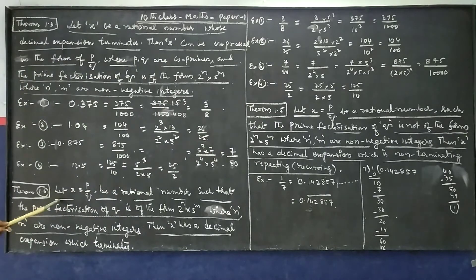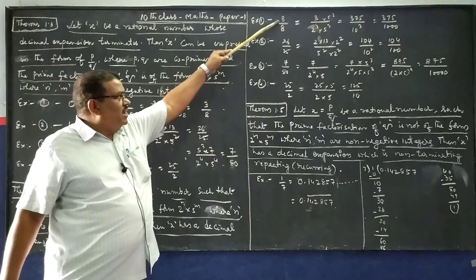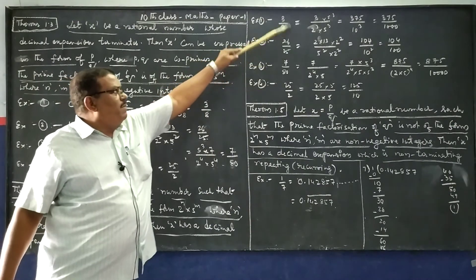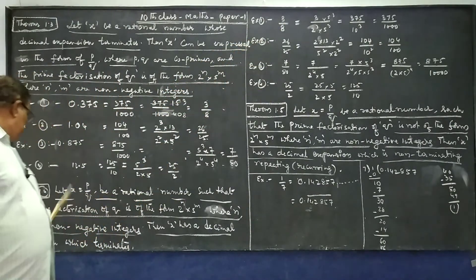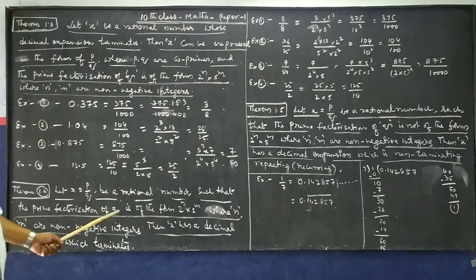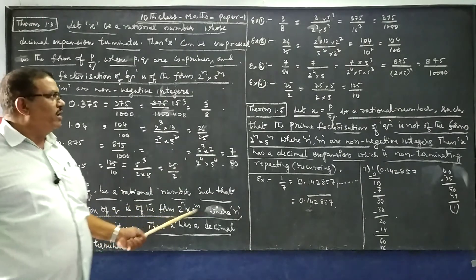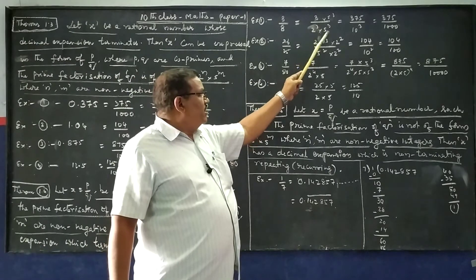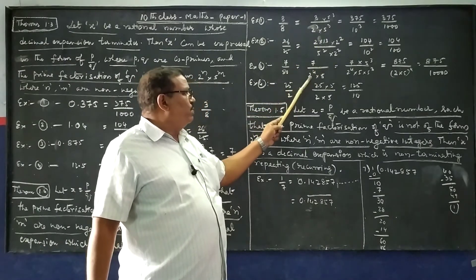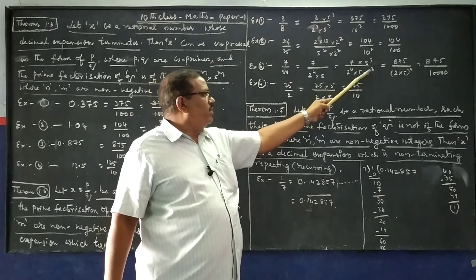See theorem 1.4 once again: Let x = p/q. All examples 1, 2, 3, and 4 are in the form of p by q, such that the prime factorization of q is of the form 2^n × 5^m. In all 4 examples, the denominators are in the form of 2^n × 5^m.